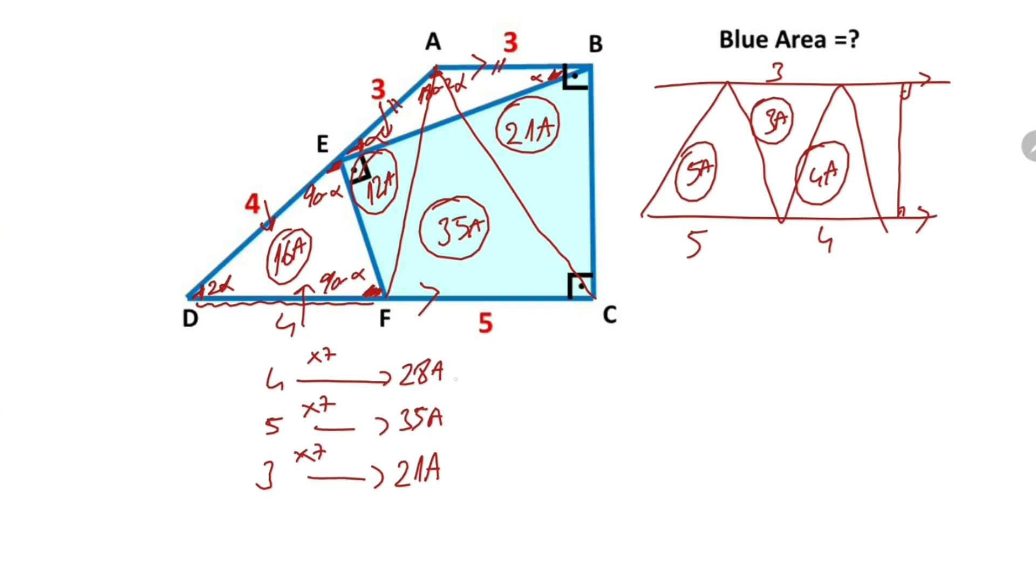The sum of these areas equals the trapezoid area. So trapezoid area equals 28a plus 35a plus 21a. That means trapezoid area equals 84a square units. Let me erase here.